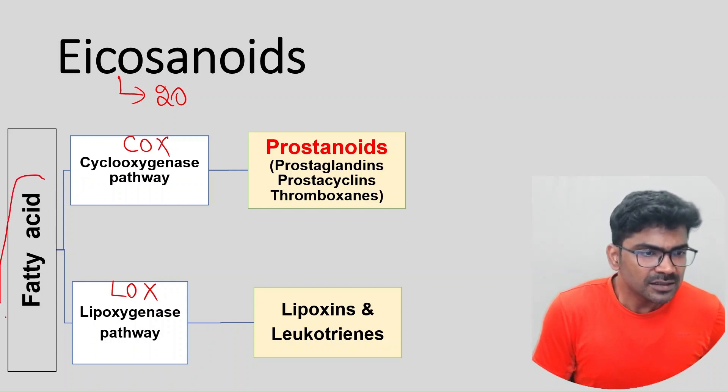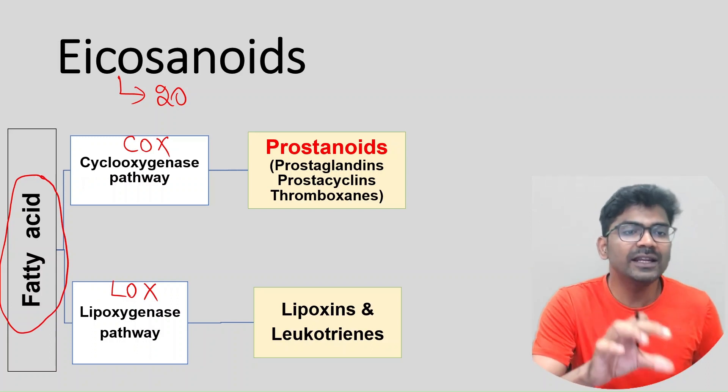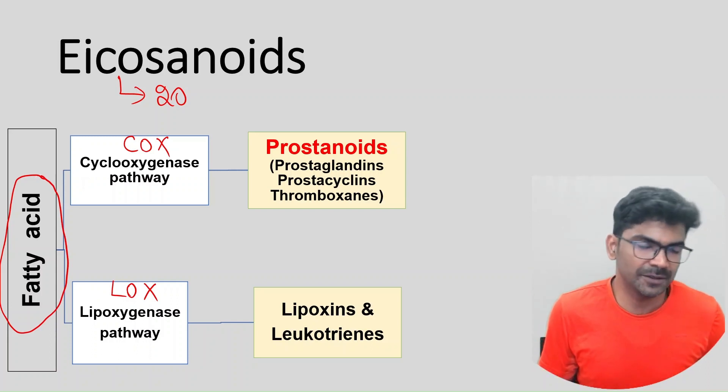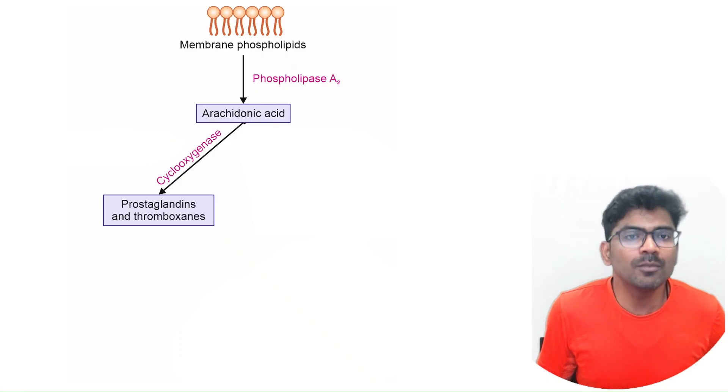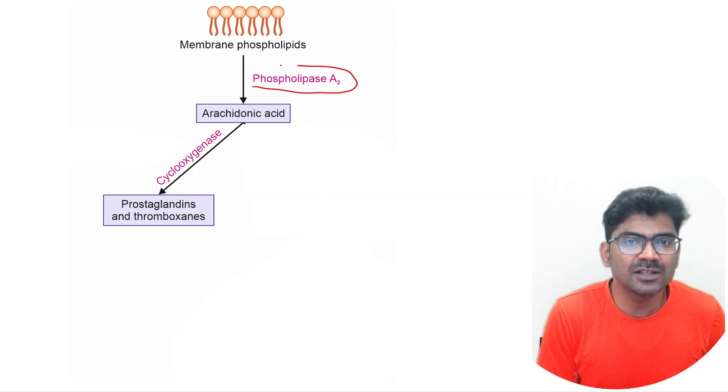Where is this fatty acid coming from? What is the source of fatty acid for COX and LOX pathway? They are coming from membrane phospholipids by the action of the enzyme phospholipase A2.